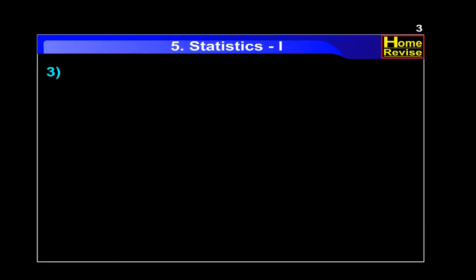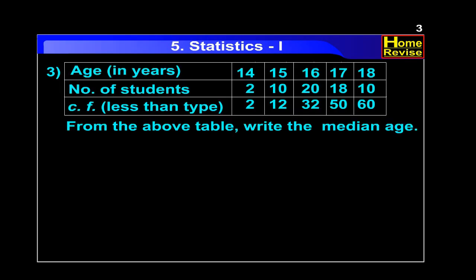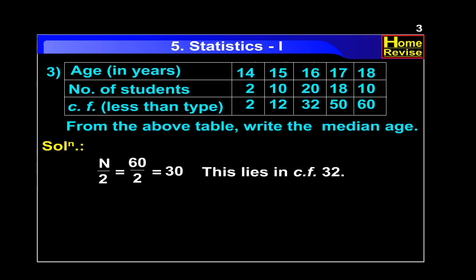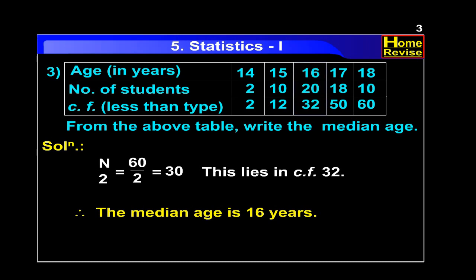Question number 3. From the above table, write the median age. N upon 2 is equal to 60 upon 2, that is 30. This lies in cumulative frequency 32. Therefore, the median age is 16 years.